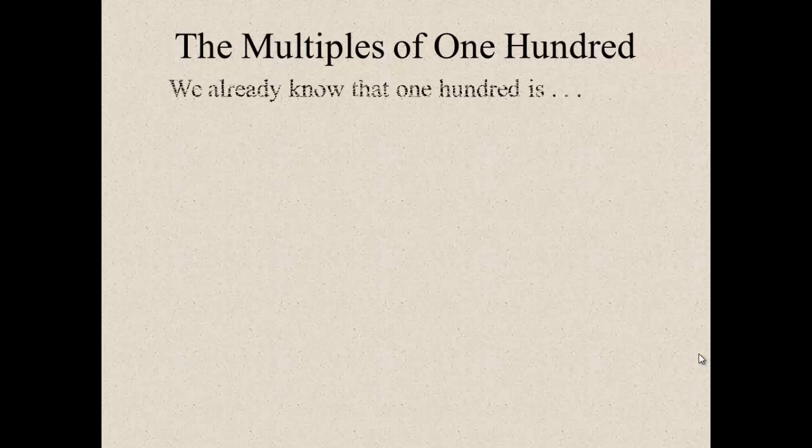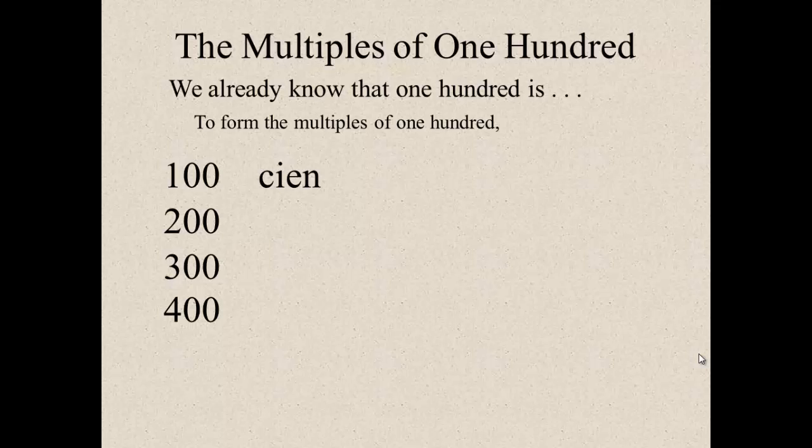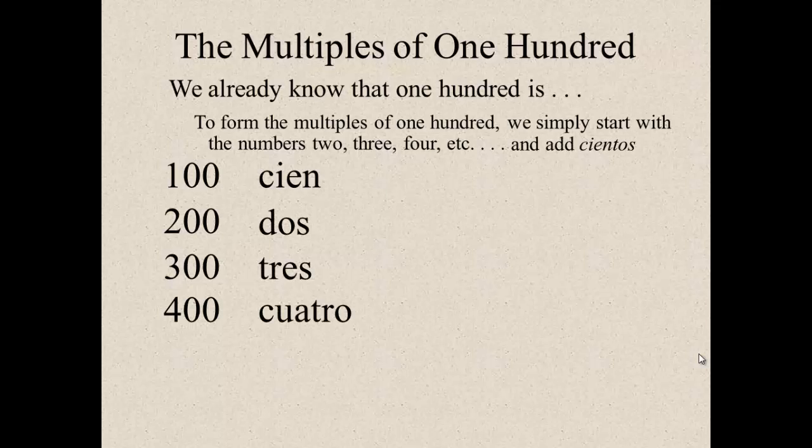Multiples of 100. We already know that 100 is cien. To form the multiples of 100, we simply start with the numbers 2, 3, 4, etc. So, dos, tres, cuatro, and then add cientos. So, doscientos, trescientos, cuatrocientos. So, 200, 300, 400. Notice that it's one word.